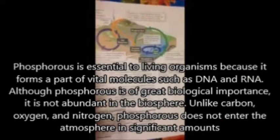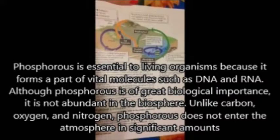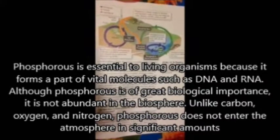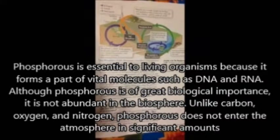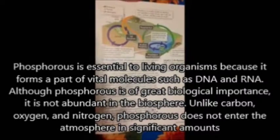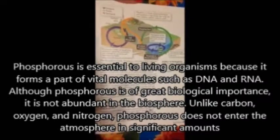Phosphorus is essential to living organisms because it forms part of vital molecules such as DNA and RNA. Like carbon, oxygen and nitrogen, phosphorus cycles through ecosystems. Phosphorus does not readily enter the atmosphere as a gas and instead cycles primarily through water, land and living organisms.